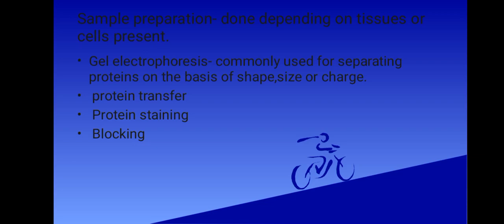In sample preparation, we find that sample preparation is done depending on the tissues or the cells present: ultrasonication in the case of cell suspension, mechanical homogenization for plants and animal tissue, enzymatic digestion for bacterial, yeast and fungal cells, or even detergent lysis for tissue cultures.